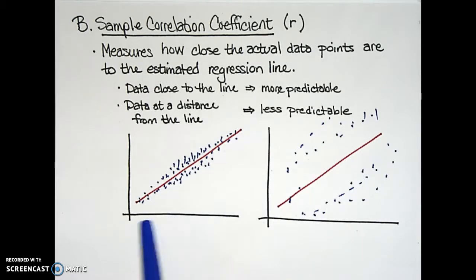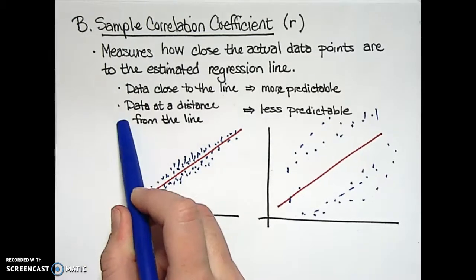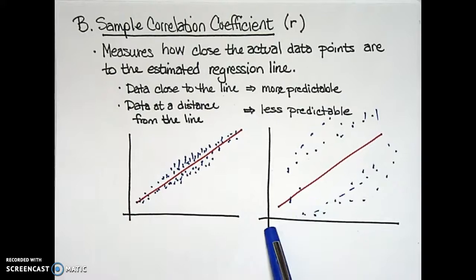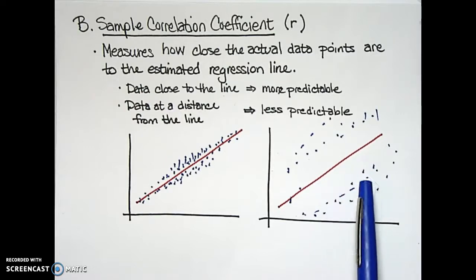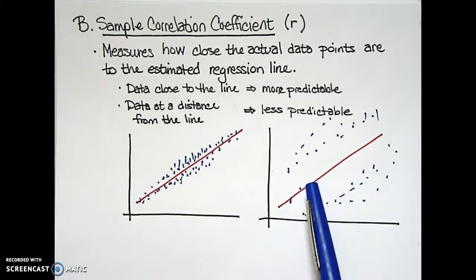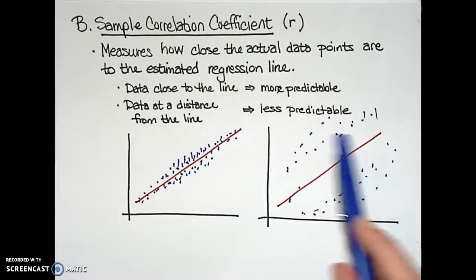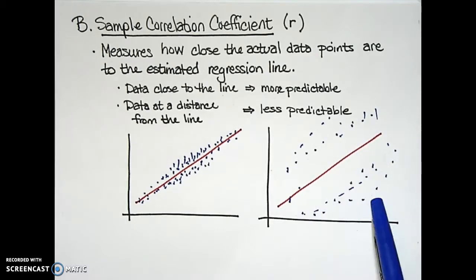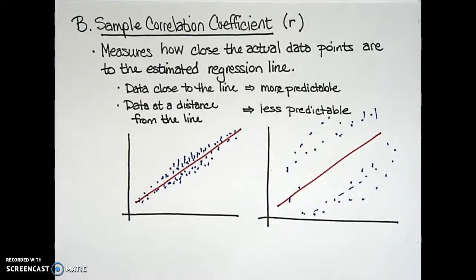Compare two examples that have the same estimated regression line but different data distributions. In the example on the left, the data is much closer to the line — the line does a better job predicting, with less error — so we anticipate a stronger relationship between the quantities on the x and y axes. In the example on the right, the regression line does a poor job of predicting since the data points are much further from the line, indicating a weaker relationship.